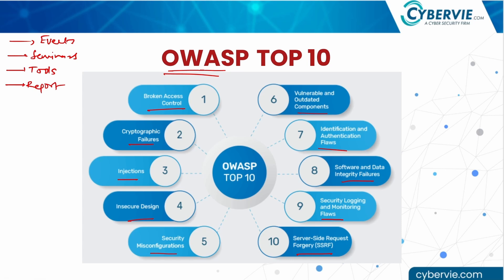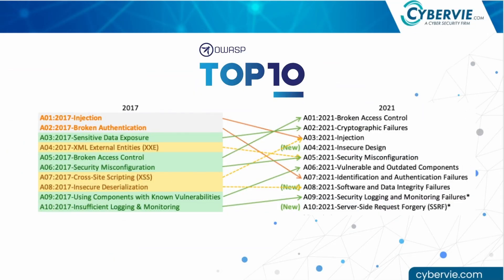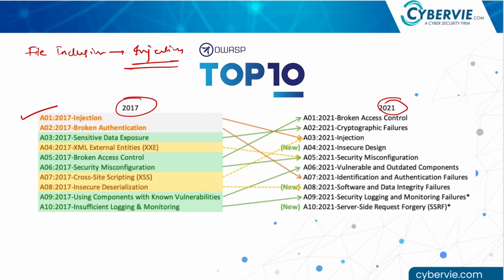The file inclusion vulnerability we are covering today also lies in the OWASP top 10. The last report was published in 2021, and before that in 2017. File inclusion falls under the injection attacks category, which was at the top in 2017 but has shifted to third position in the 2021 OWASP top 10 report. So this vulnerability is very important, lying in the top three per OWASP research.